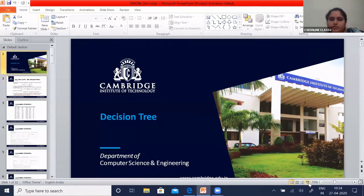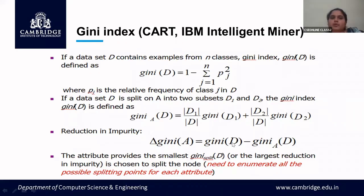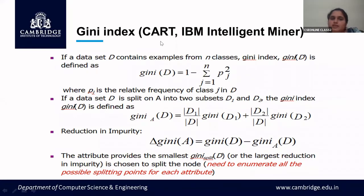We will continue with Gini index in today's class. Gini index is one more technique of decision tree. It is also called CART. It was developed by IBM and is also called IBM Intelligent Miner. This type of decision tree is more sophisticated when compared to all other techniques — ID3 and gain ratio — that we have dealt with so far.